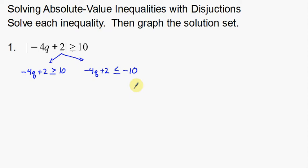So this symbol I need to switch from greater than or equal to, to less than or equal to. Now we have our two inequalities — our compound inequality. Now I'm going to solve. Notice that on both sides I'm going to subtract 2 and then divide by negative 4, so I'm doing the same steps on both. I'll get different answers in the end, but the steps are the same, which makes solving a little faster and easier.